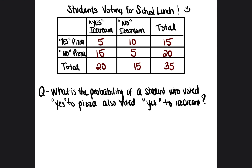This is going to be based on the information in this chart. We're going to answer this first question: what is the probability of a student who voted yes to pizza also voted yes to ice cream? It can be hard to read these types of charts, but the best way to do this is to remember that probability is represented as a fraction. The specific ask is on the top and the total is on the bottom.